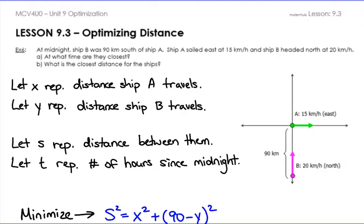It should be very similar no matter what you're actually trying to optimize. Even though we were talking about in 9.1 optimizing area, or in 9.2 optimizing volume, or in this video distance — they should all have the same kind of steps.